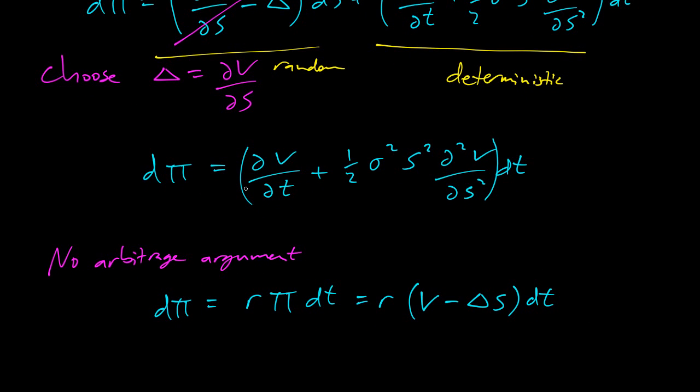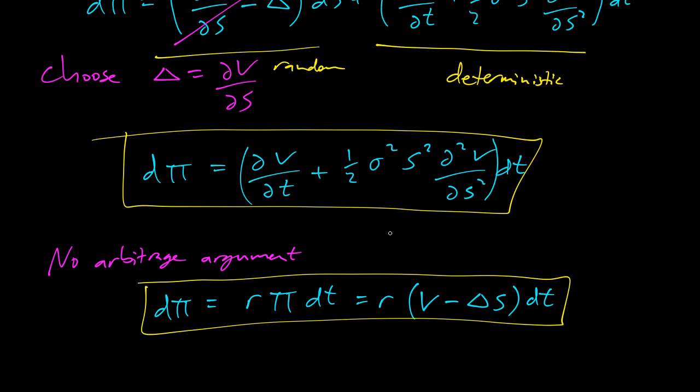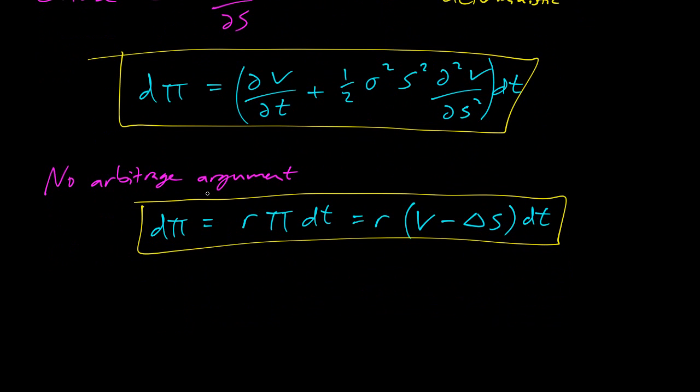So now we have a formula for dπ here. So we've got this one, we've got this one here. So let's put them together. So I'm going to do this one here on the left. It's ∂V/∂t plus half σ² S² ∂²V/∂S² dt.